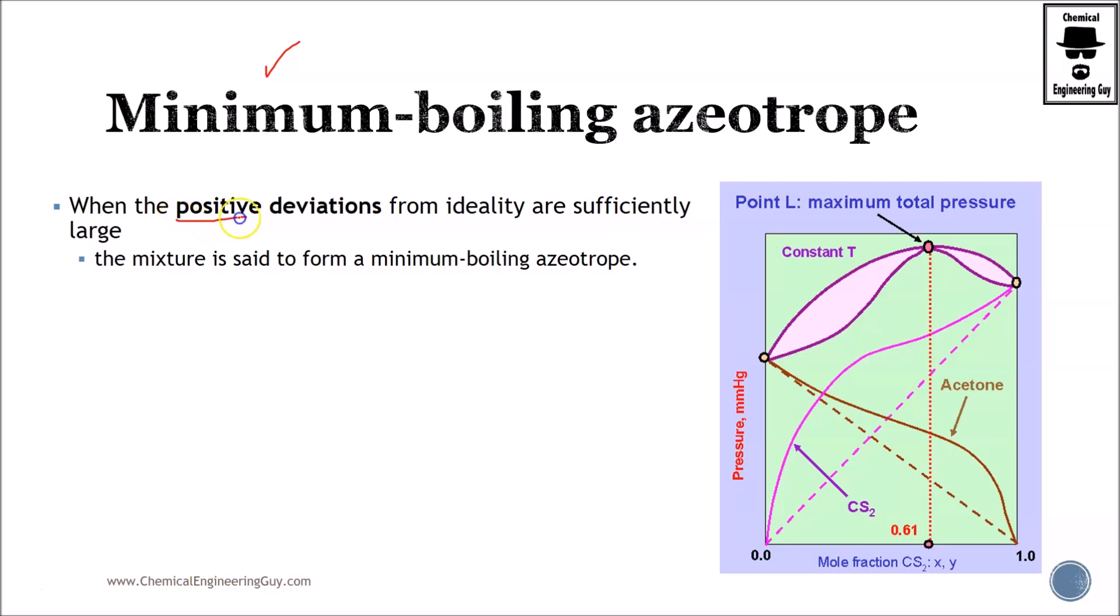And when we have positive deviations, remember that if you're talking about the pressure diagram, the Raoult's Law will be something around here. That's Raoult's Law. Then if you have a minimum boiling azeotrope, you should have positive deviations, meaning that the lines will be on the top or above the model of Raoult's.